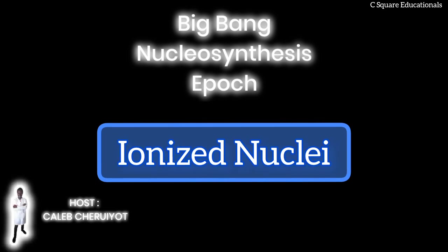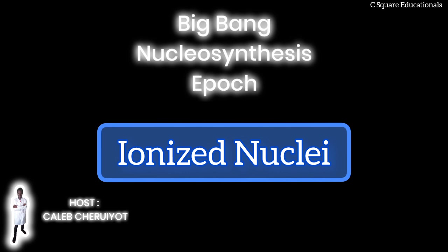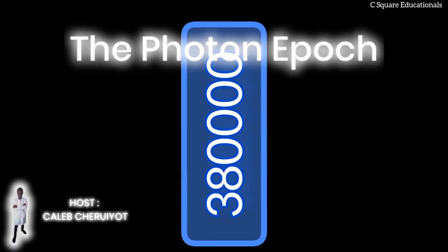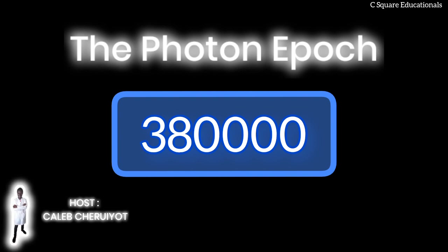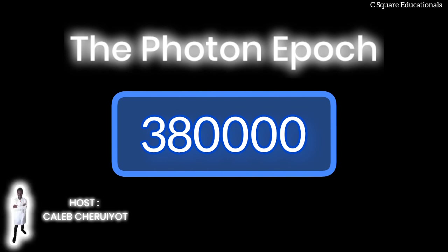The formation of neutral atoms requires electrons to attach to positively charged nucleons to achieve charge balance. However, the universe is still scorching and electrons can only briefly adhere to nucleons before being forcibly separated due to their immense energy. As a result, the universe remains opaque and photons carrying light continuously interact with nucleons and electrons, preventing their free propagation through space. This photon epoch lasts for about 380,000 years until the universe cools down to 3,000 Kelvin. At this point, electrons possess significantly reduced energy, allowing the electromagnetic force to permanently bind them to nucleons, leading to the formation of stable, neutral atoms in a process called recombination.